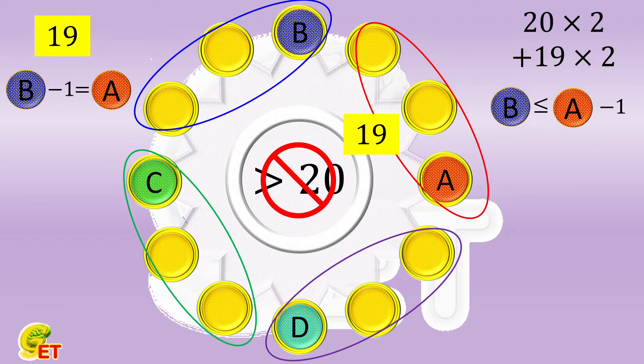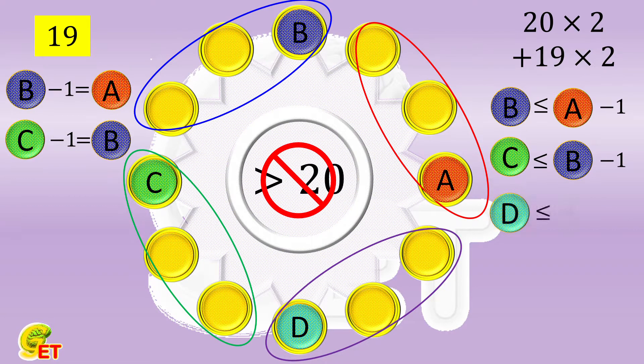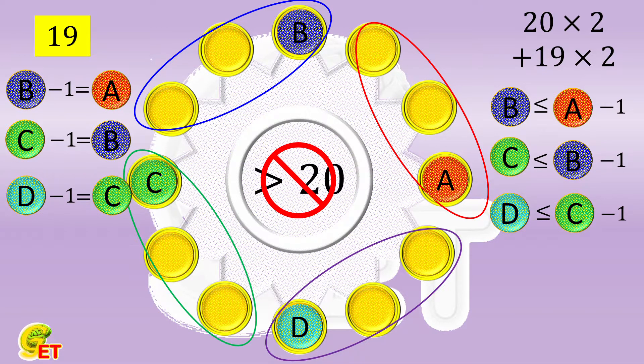In the same way, if the summation of the second group is 20, c cannot be bigger than b minus 1. If its summation is 19 however, it is also possible that c is 1 bigger than b. If the summation of the third group is 20, d cannot be bigger than c minus 1. Again, if it is 19, d may also be 1 bigger than c. If the summation of the fourth group is 20, a cannot be bigger than d minus 1. But if 19, it is also possible that a is 1 bigger than d.